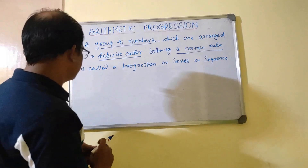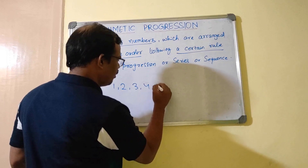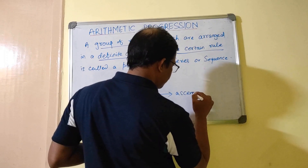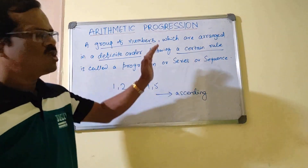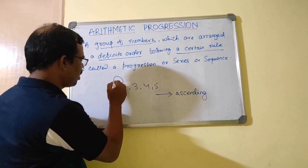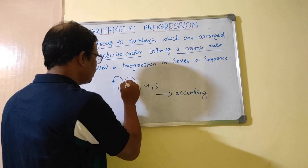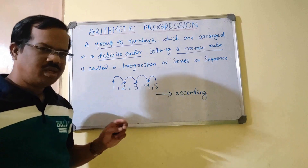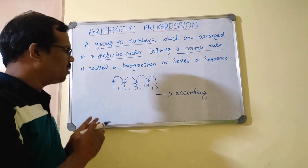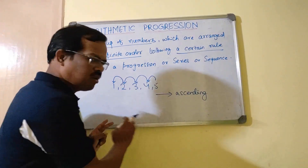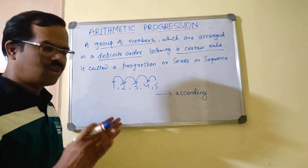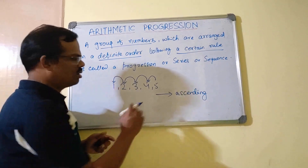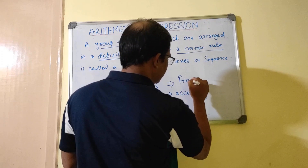The very important things to note: a group of numbers — it could be one, two, three, four, five — which are arranged in a definite order, in this case ascending. Everything follows a certain rule: two is greater by one from the preceding number, three is greater by one, four is greater by one. Every number is greater by one from its preceding number. That's the rule, so this set of five numbers is called a progression or a series or a sequence.